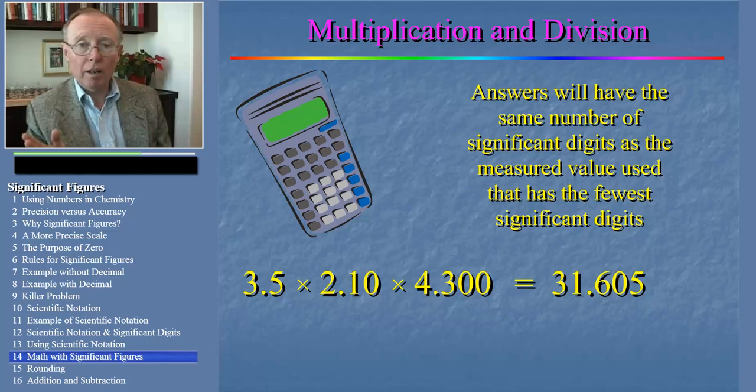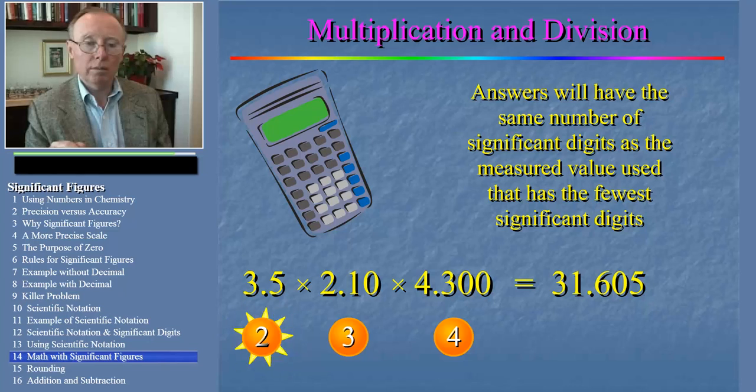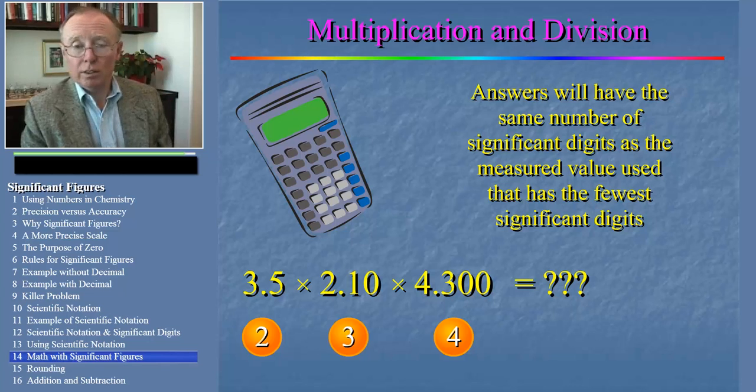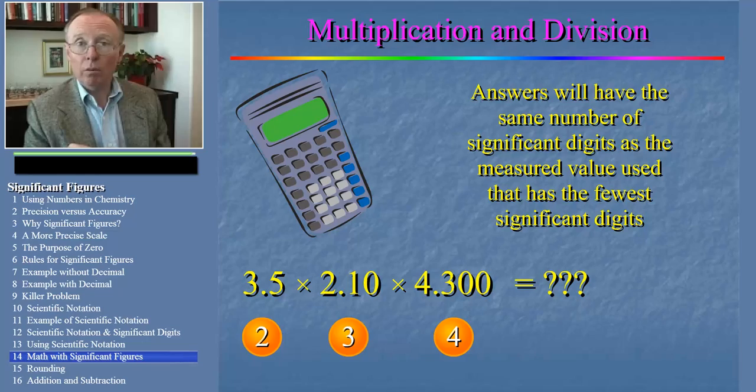To figure out how many significant digits to show we must look at each measured number used in the calculation. 3.5 has 2 significant digits, 2.10 has 3, and 4.300 has 4. 3.5 has the fewest significant digits, so our answer must have the same number as in 3.5, which is 2 significant digits. Now the question arises how do we convert our answer into only 2 significant digits? To decide that question we need to learn about rounding.